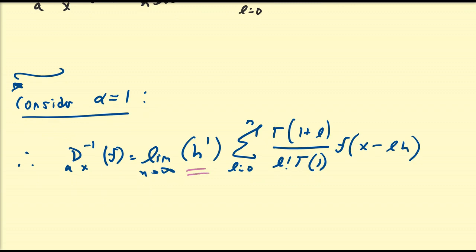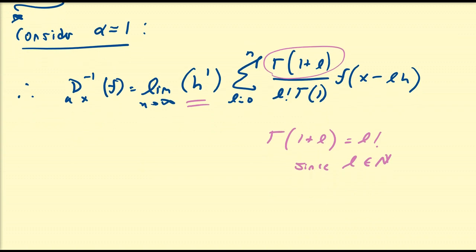So of course h to the first is just h. Also, gamma(1 plus l) is the same as l factorial by the connection between the factorial and gamma function, and this is true since l is a natural number as it is the index of the summation. So gamma(1 plus l) and l factorial cancel. We also know that gamma(1) is equal to zero factorial, which equals 1 by definition.